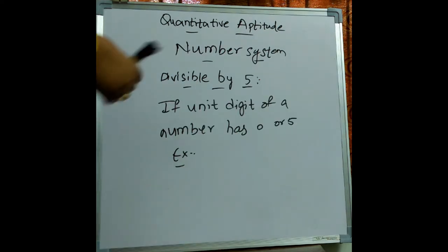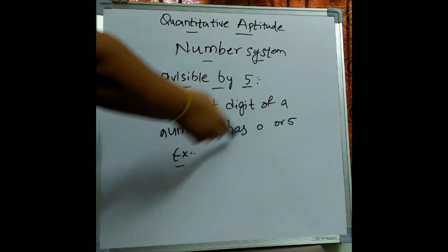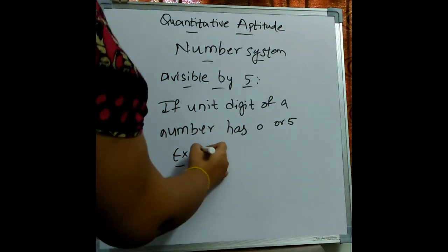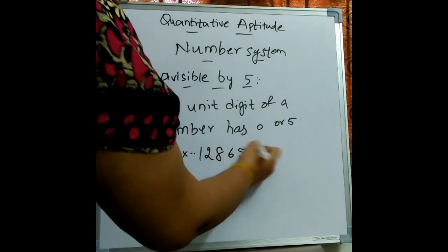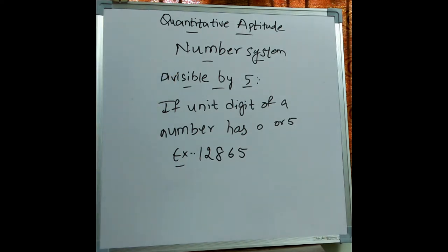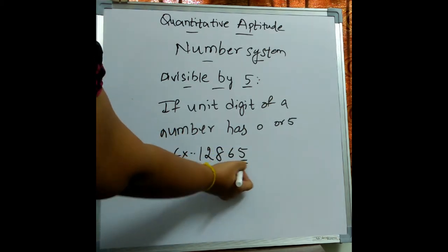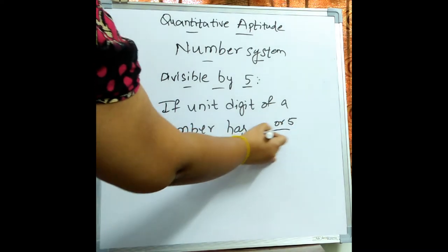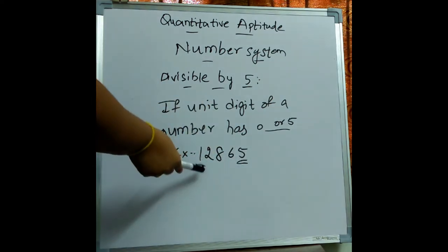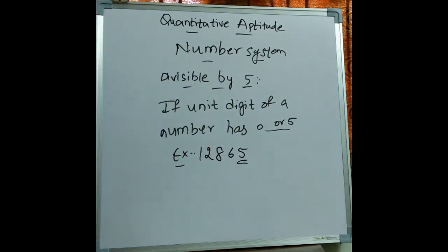Now let's see the rule for finding out whether a number is divisible by 5. This is very easy. If the unit digit of a number has either 0 or 5, then the complete number is divisible by 5. For example, take 12865. We check the units place digit, which is 5. Since the units place is 5, the entire number 12865 is also divisible by 5.